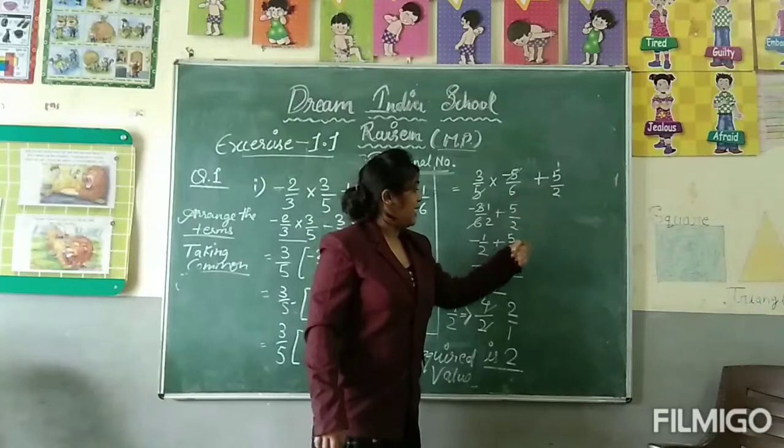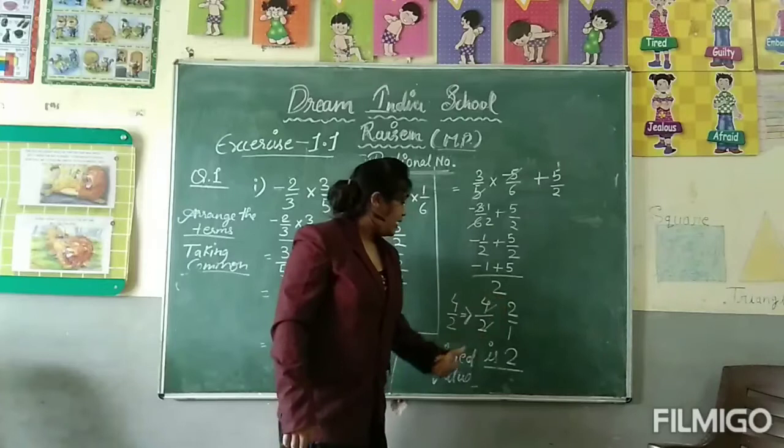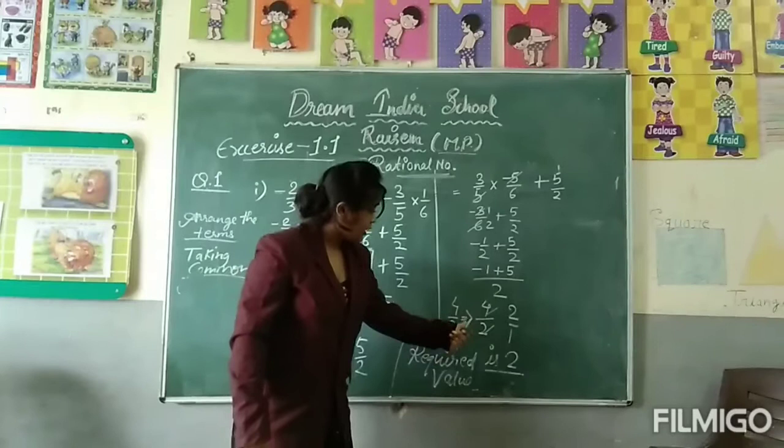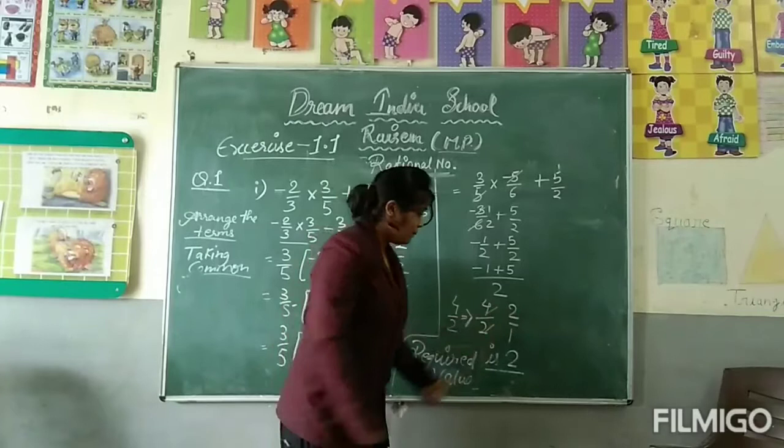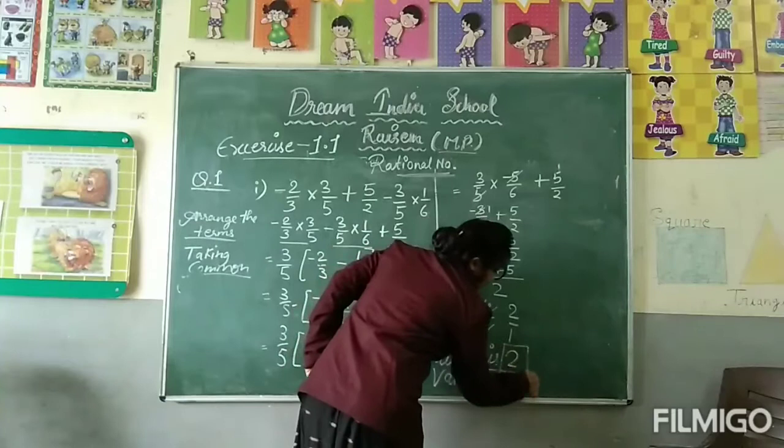Is it clear? Taking LCM, what is 2? Minus 1 plus 5 upon 2. Minus 1 plus 5 is 4, denominator is 2. We write 4 upon 2. Canceling, we get 2 upon 1, which is 2. So our resultant value is 2.